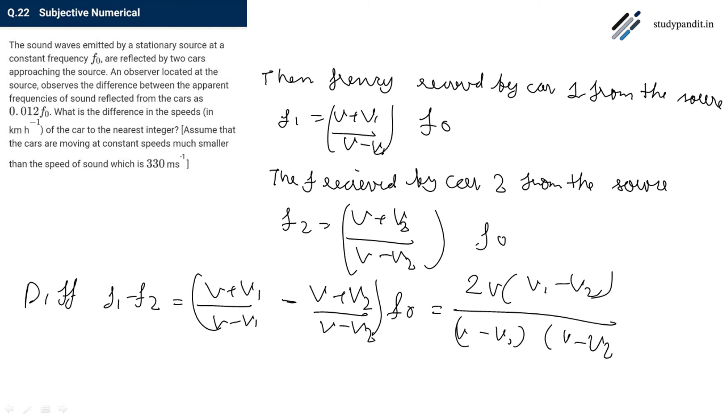Since we know that V1 and V2 are negligible in comparison to V because the speed of sound is 330 and it's given that neglected, so V minus V1 equals to V minus V2 equals to almost V.